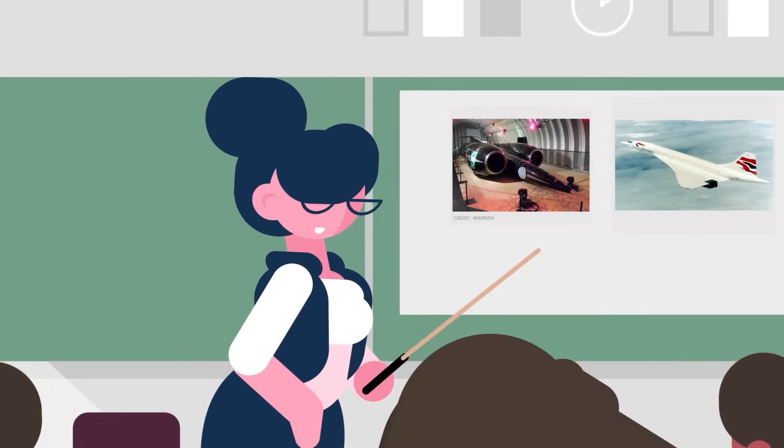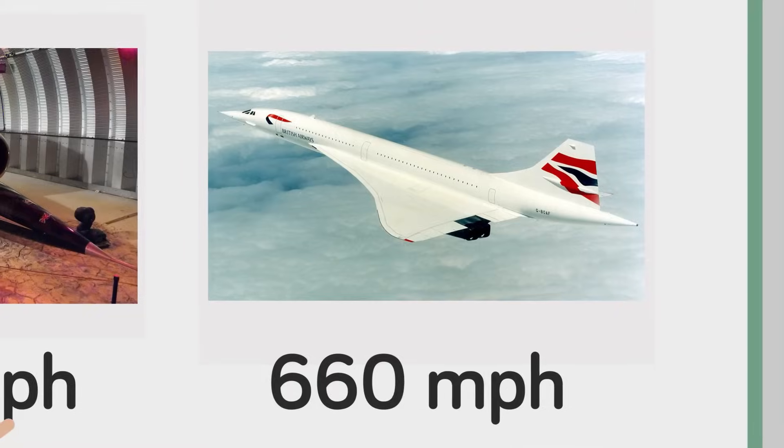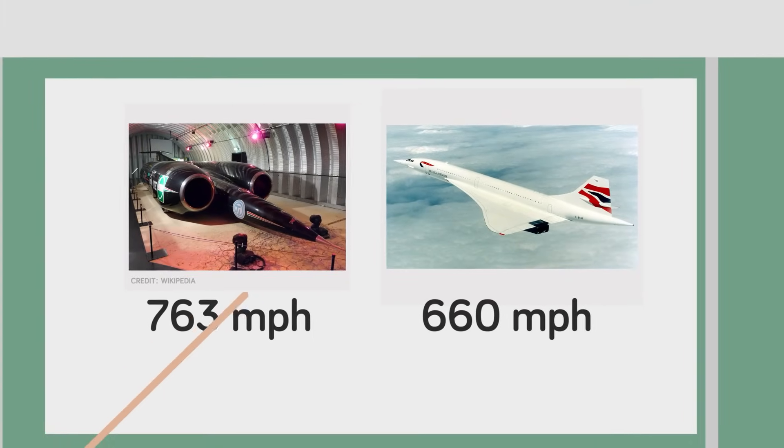Both created sonic booms when they passed the sound barrier, but the Thrust SSC needed to travel much faster than the Concorde to achieve the phenomenon due to its lower elevation.